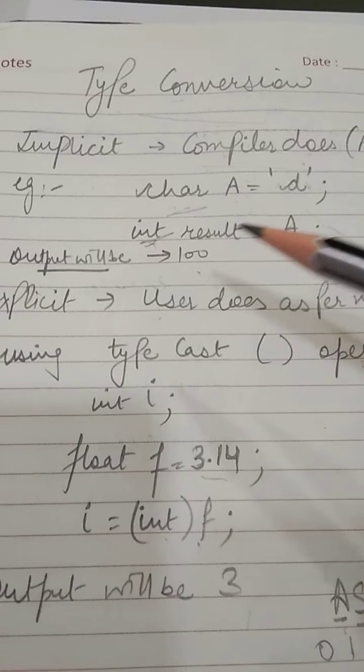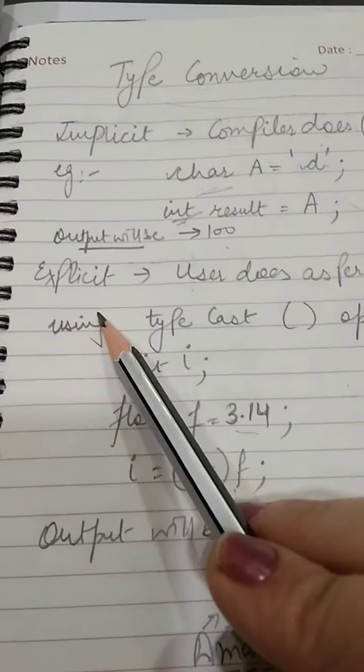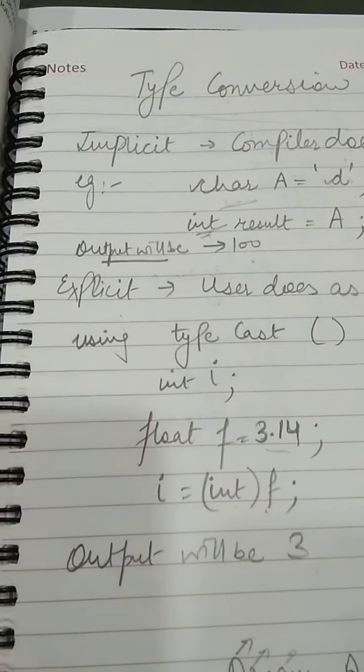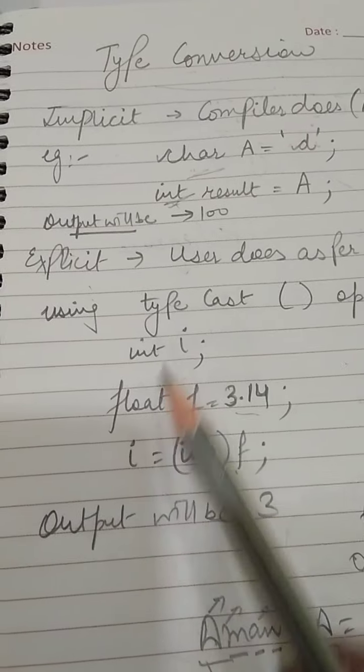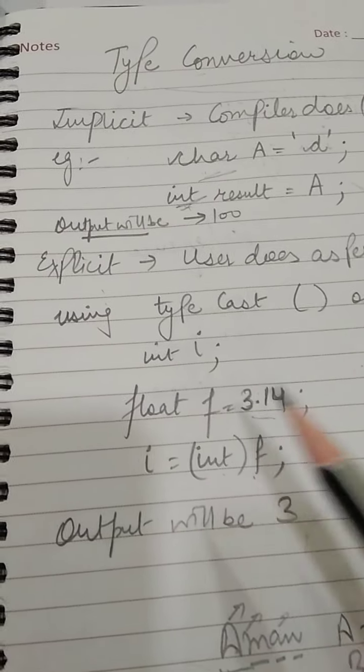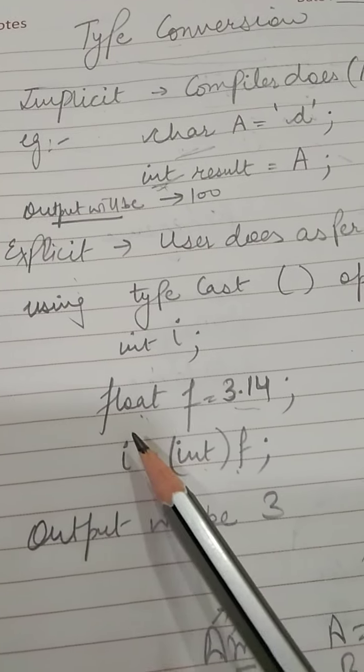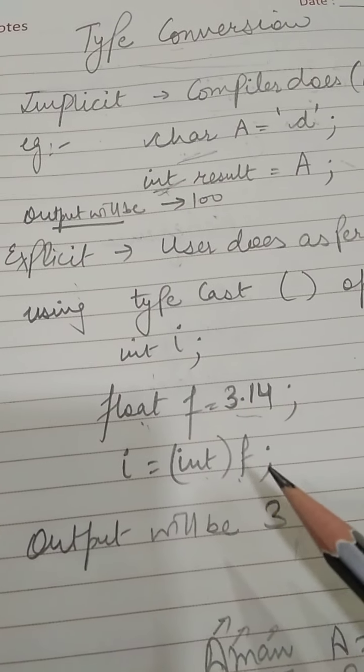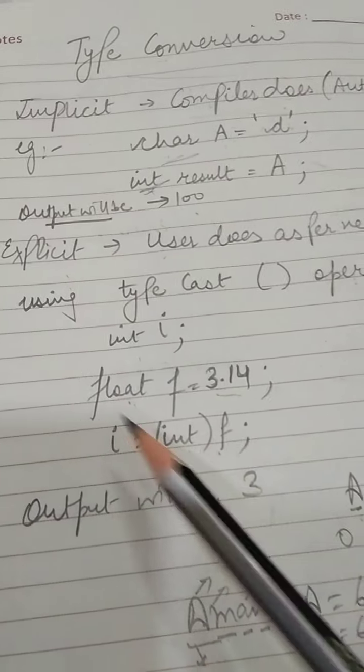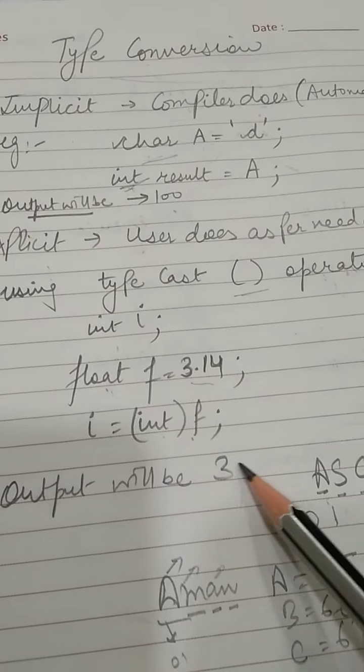It is only possible with the help of explicit type casting. Either we want to convert same number of bytes of data types, or we want to change from bigger to smaller data type, we need to use explicit type casting with the help of type casting operators.